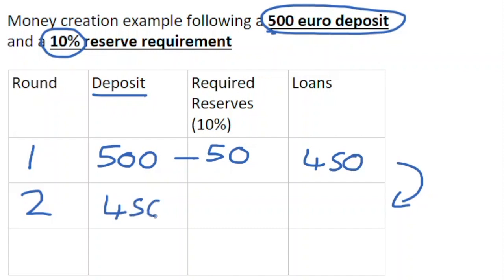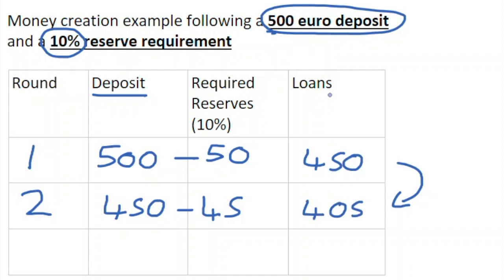If the €450 is spent — for example, in an electrical goods store — the store owner will likely deposit this back into the bank. So in this simplified scenario, the €450 created in loans will be deposited back into the banking system, perhaps not at the same bank, but back into the system. So €450 comes back in as a new deposit from a new person — the owner of the electrical goods store. 10% of that new deposit, which is €45, must be kept in reserve, and the difference of €405 can be loaned out.